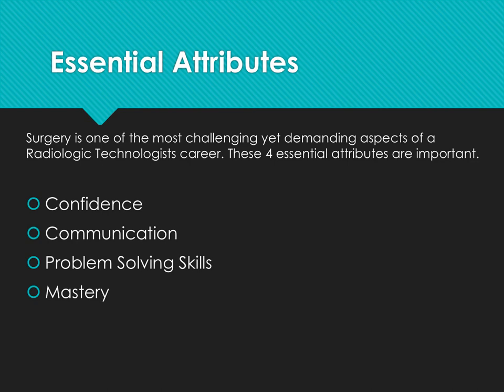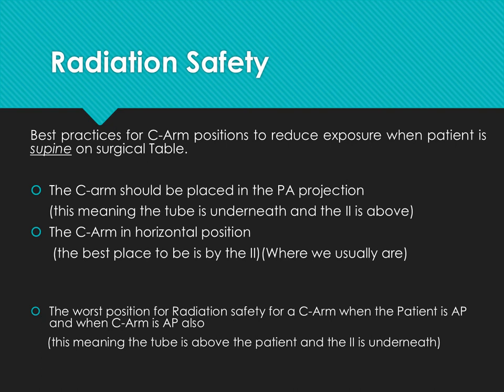Radiation safety. Best practices for C-arm positions to reduce exposure when the patient is supine on the surgical table: the C-arm should be placed in the PA projection, meaning the tube is underneath and the image intensifier is above the patient. The C-arm is in horizontal position, and the best place to stand is by the II. The worst position for radiation safety is when the C-arm is AP — the tube is above the patient and the II is underneath.